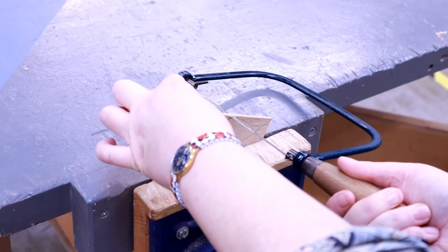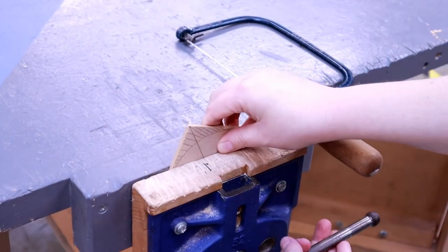If your work is moving too much backwards and forwards, you just need to lower it down in the vise.